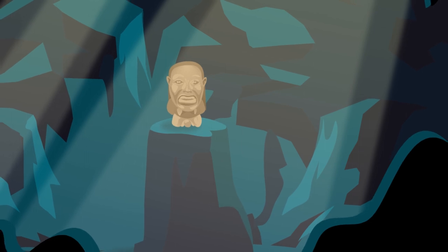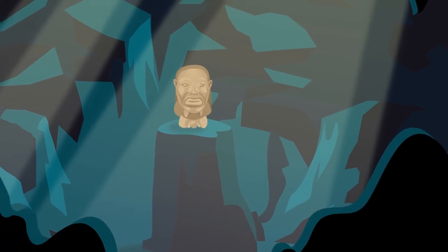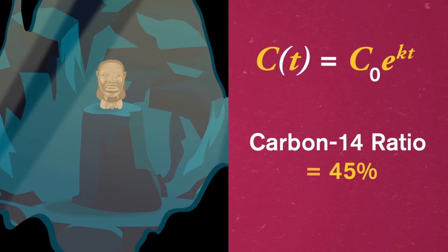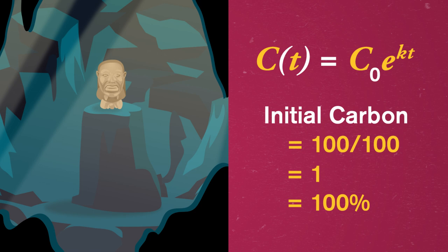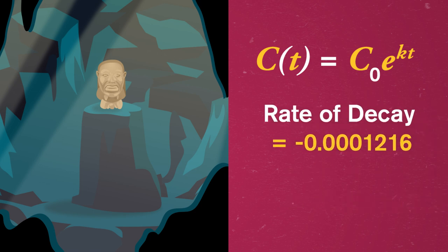The amount of carbon at some time t is equal to the initial amount of carbon times e raised to the rate of decay multiplied by t. Let's say we found an old-looking piece of intricately carved wood in a cave, and we find its carbon-14 ratio is about 45% of that in living wood. So our current carbon is 45 hundredths, or 0.45. But the initial carbon was 100 hundredths at the time the wood was cut, or just one.